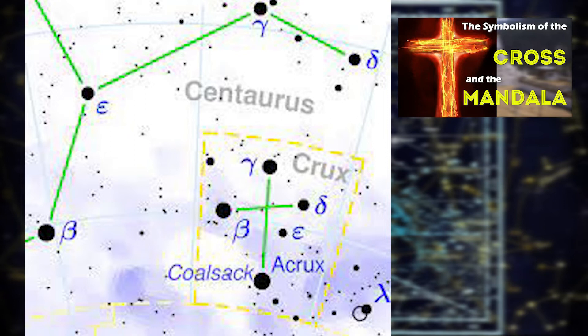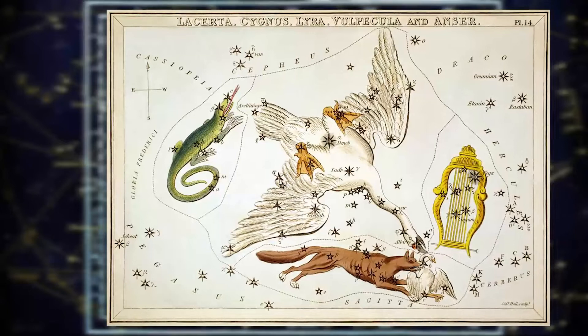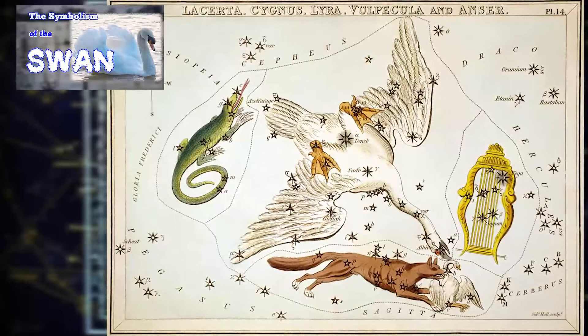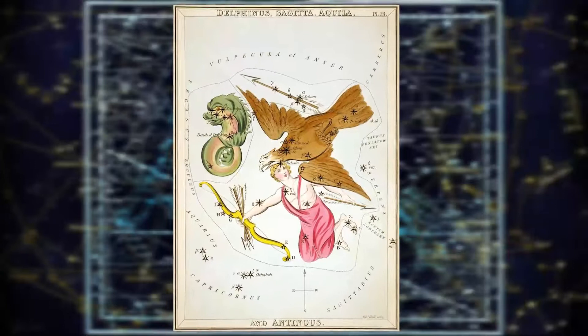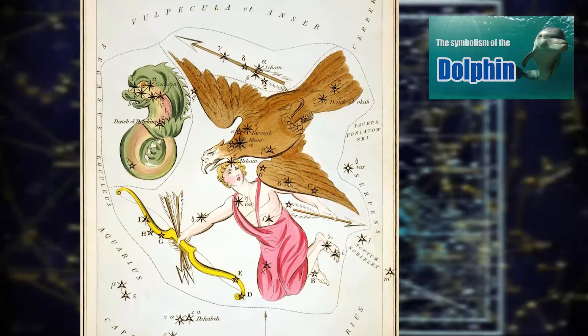Cygnus, the Swan constellation. We have a video in the playlist entitled The Symbolism of the Swan. Delphinus, the Dolphin. We have a video in the playlist for this constellation: The Symbolism of the Dolphin.